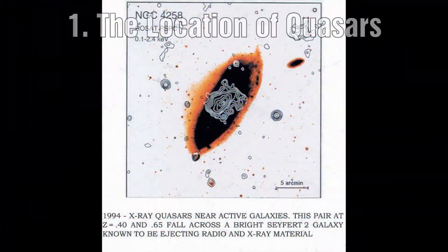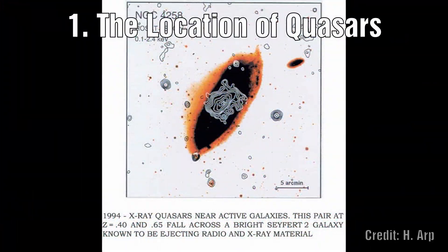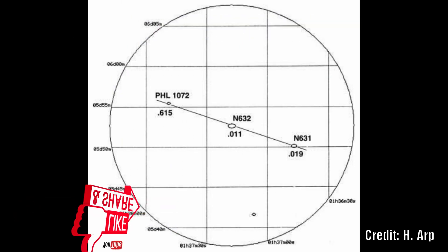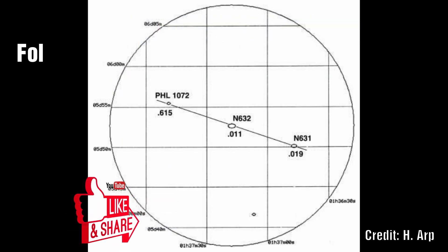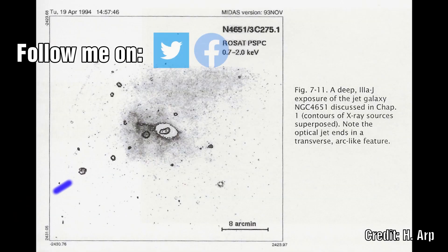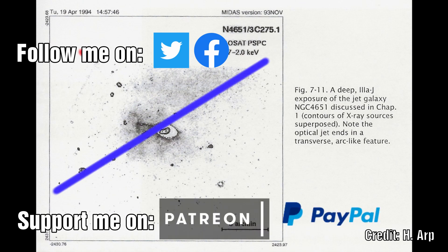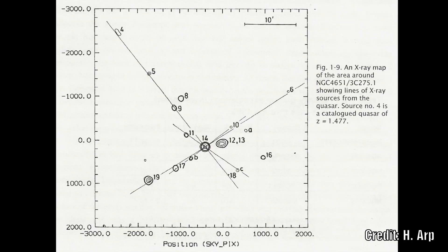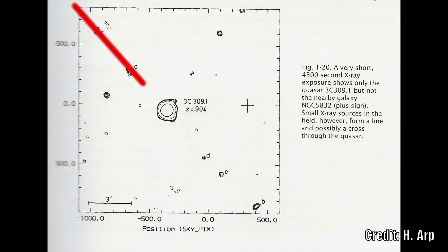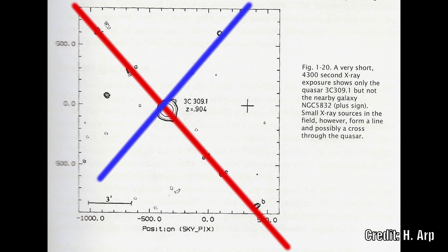Number 1: The location of quasars. We clearly see many examples of quasar pairs situated across an axis of a nearby galaxy. Often we find multiple strands of quasars running along these lines, and these lines can run perpendicular to each other, centred around the host galaxy, often creating what we see as an X shape.